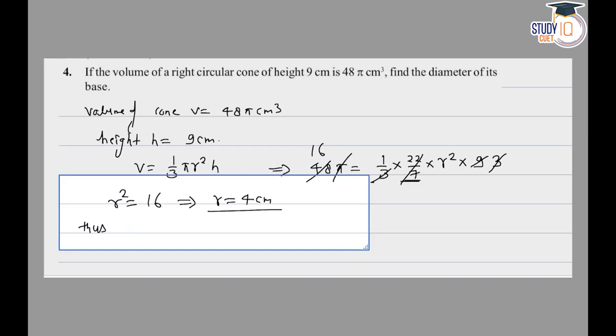To find the diameter, diameter of base of cone equals 2r, which is 4 × 2 equals 8 centimeter. This is the answer for this question.